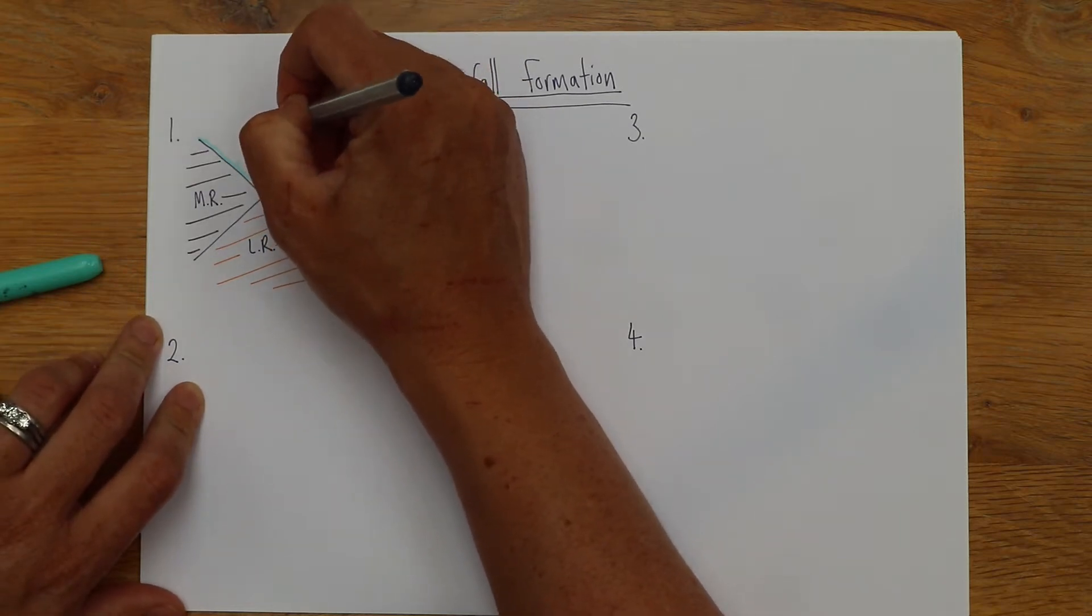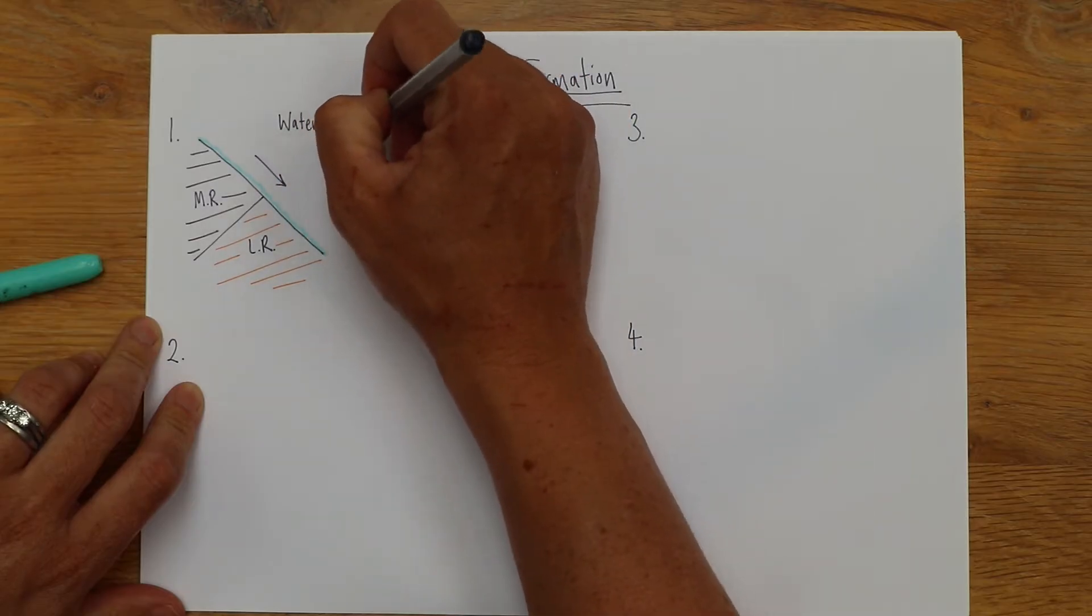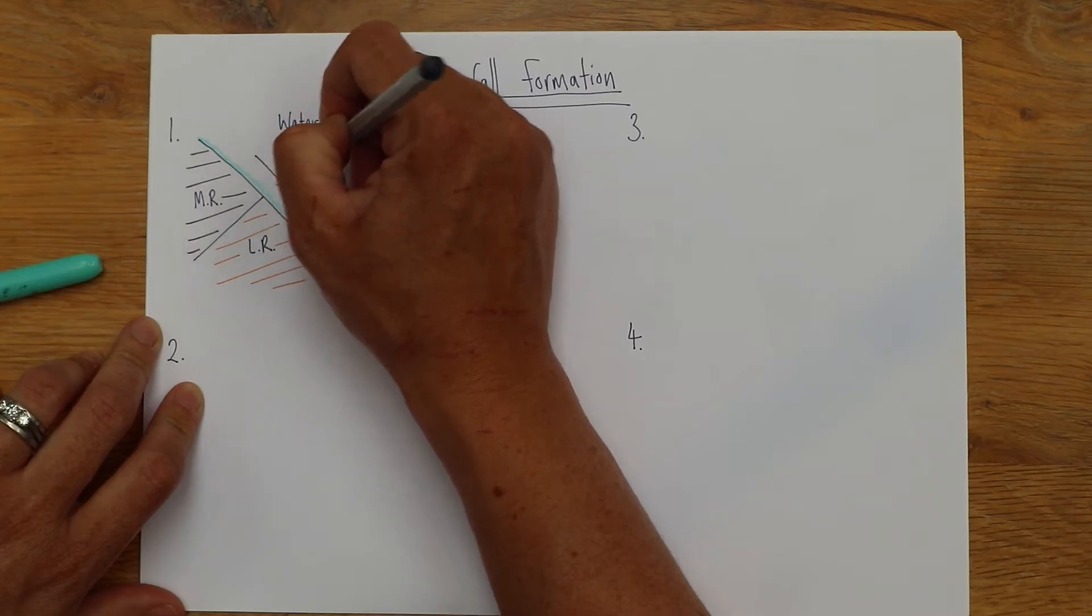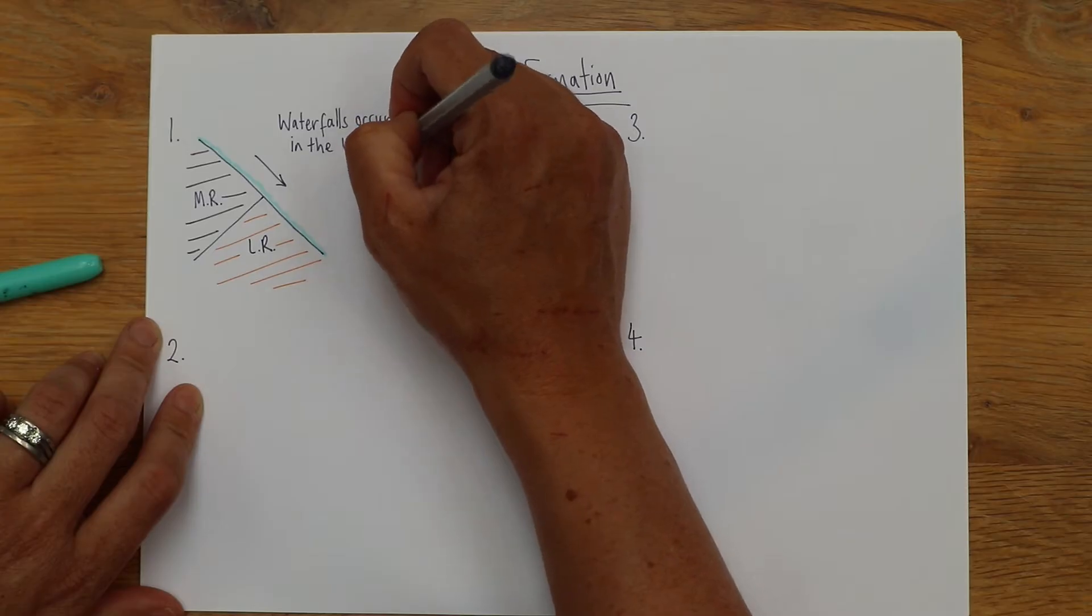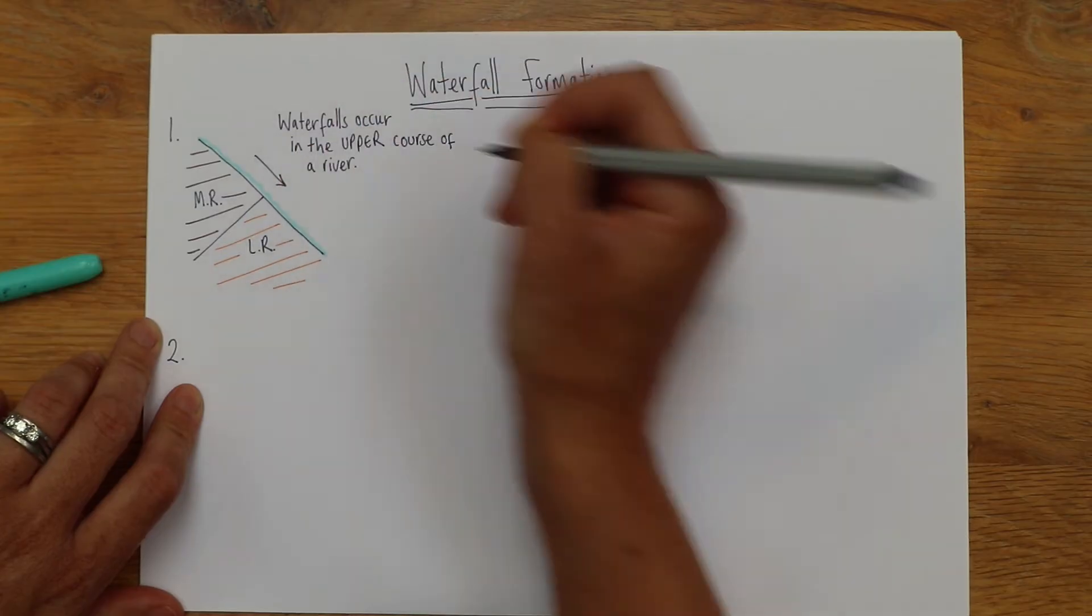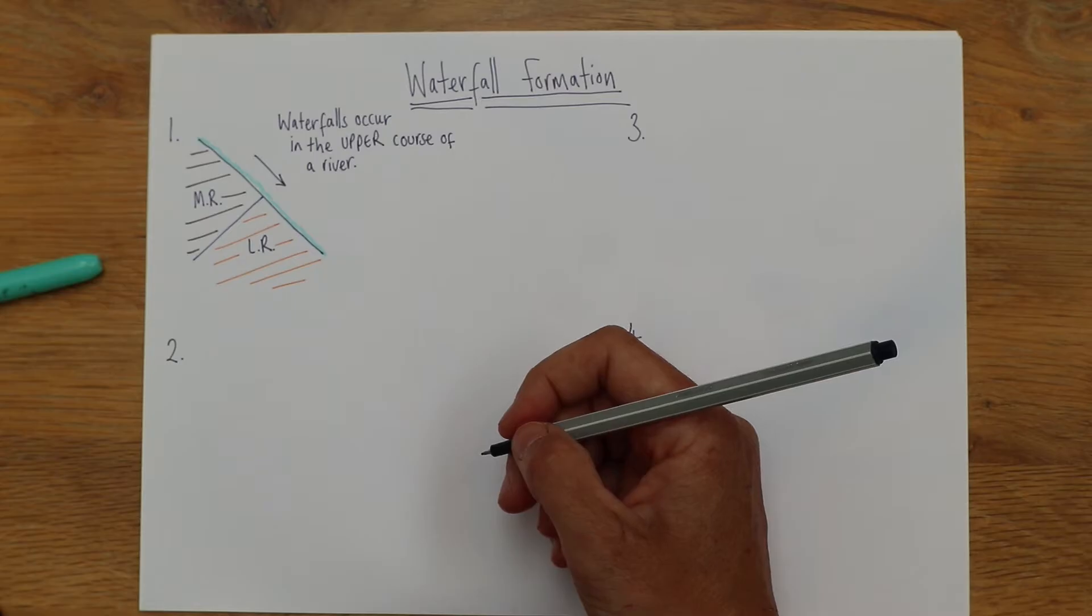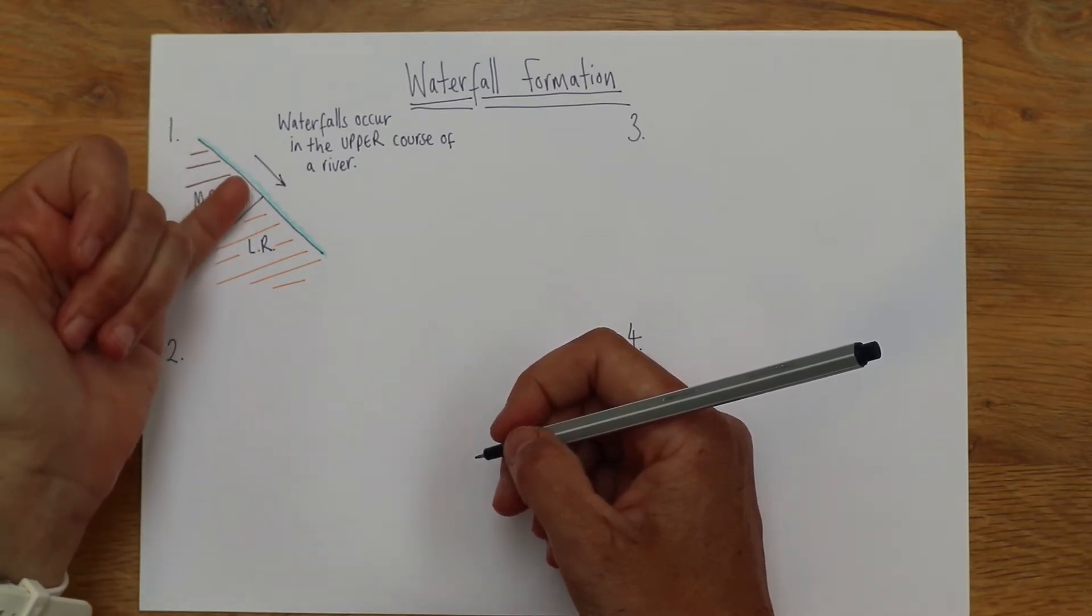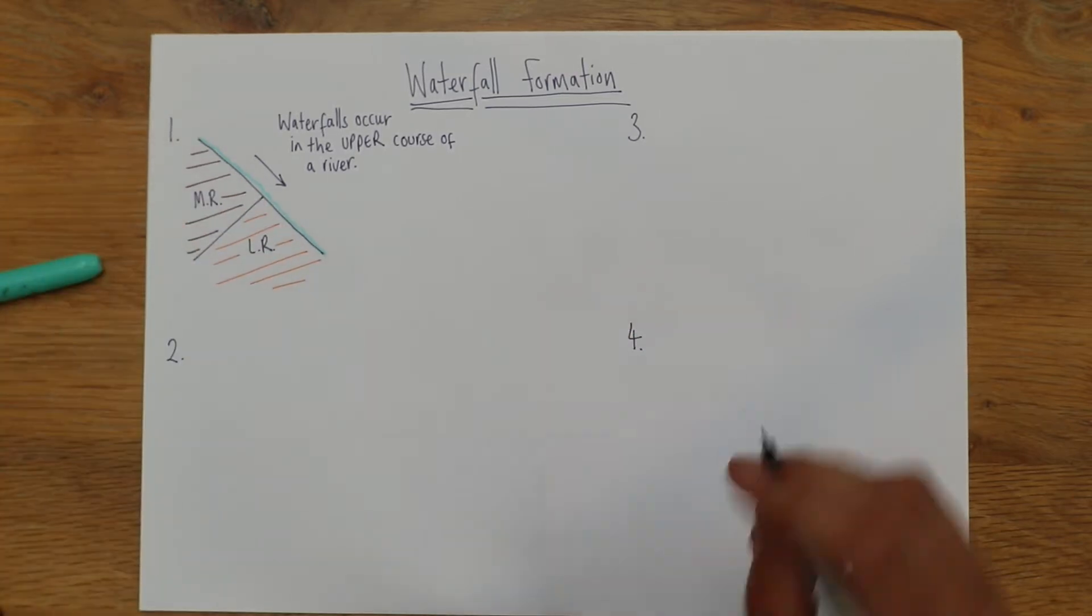We just need to jot a couple of things down, so let's write: waterfalls occur in the upper course of a river. We don't see them in the middle course or the lower course. What happens basically in this upper course is it goes from this more resistant rock towards a less resistant rock and it's when that happens that we see waterfalls start to occur.